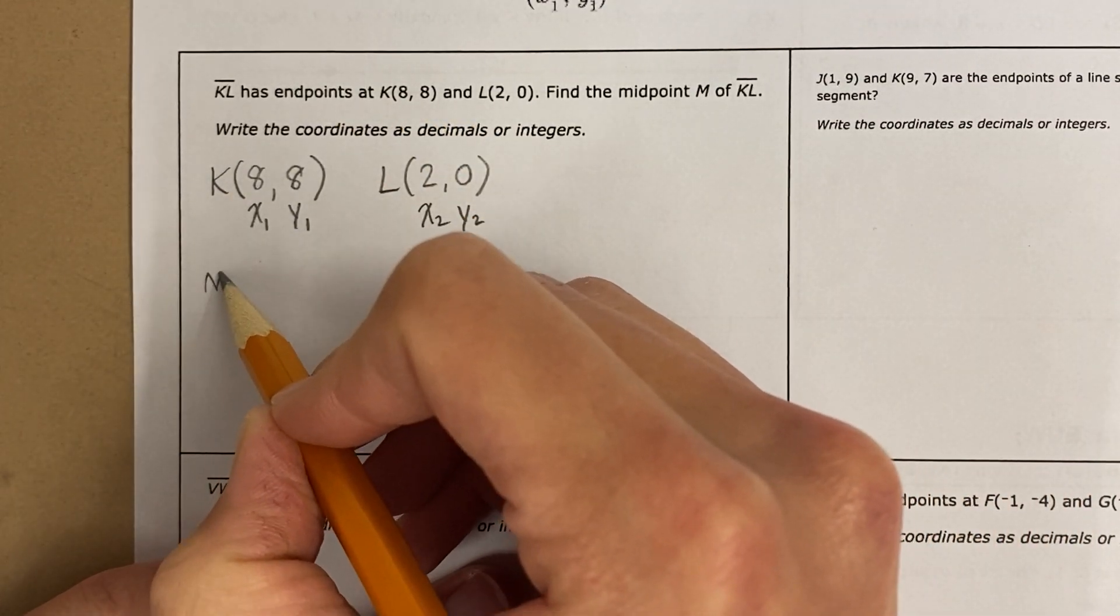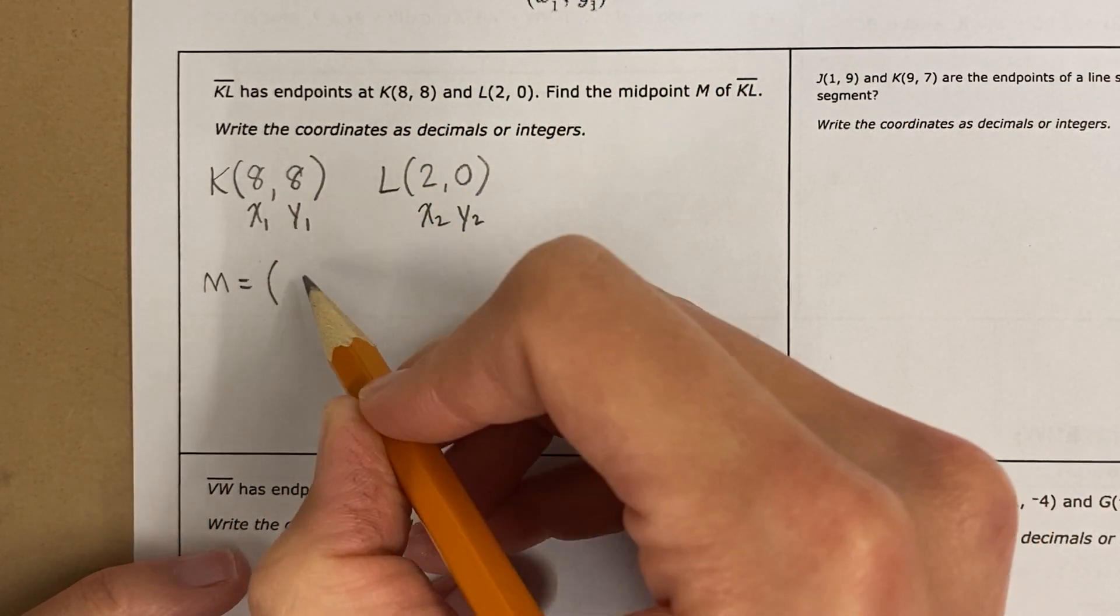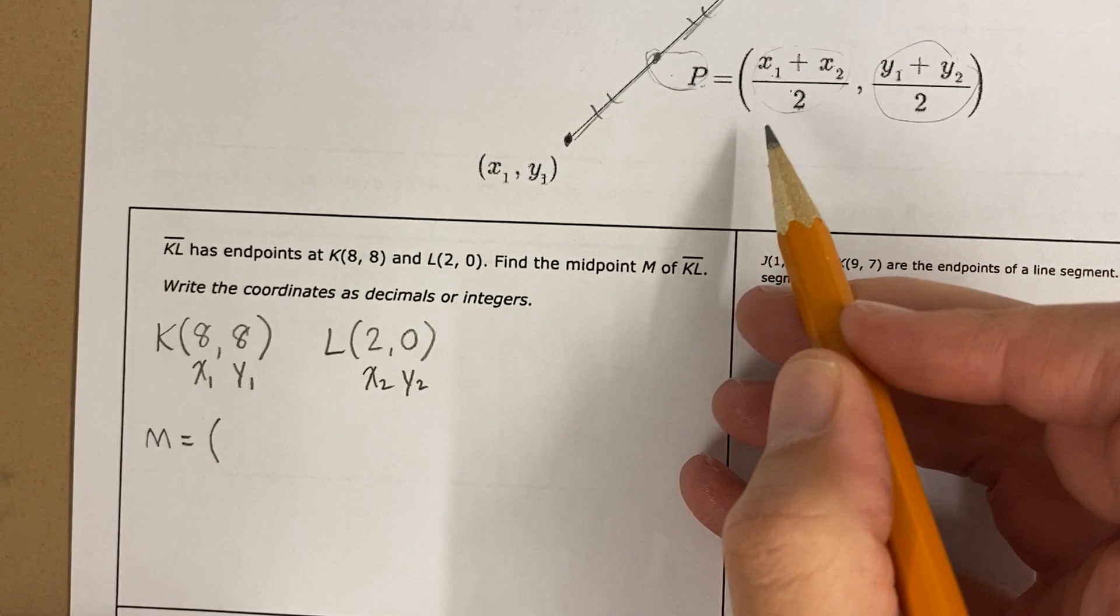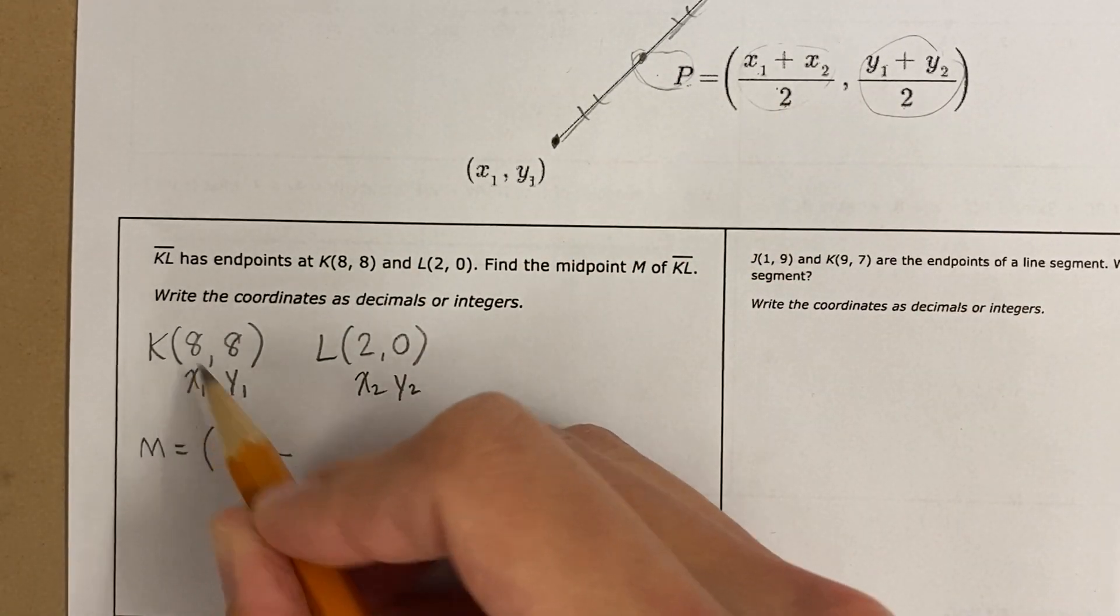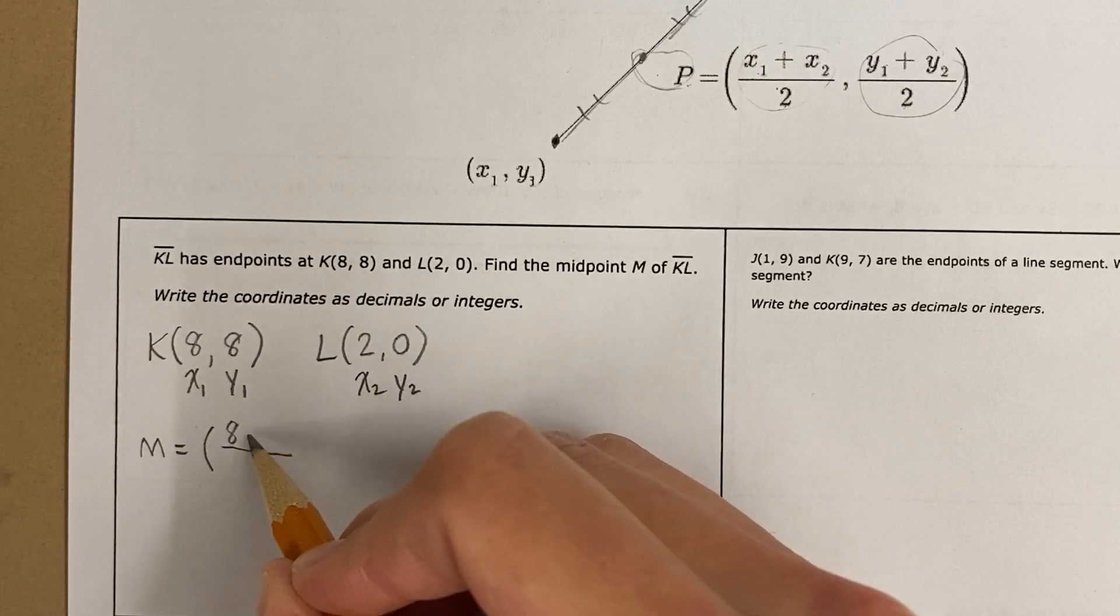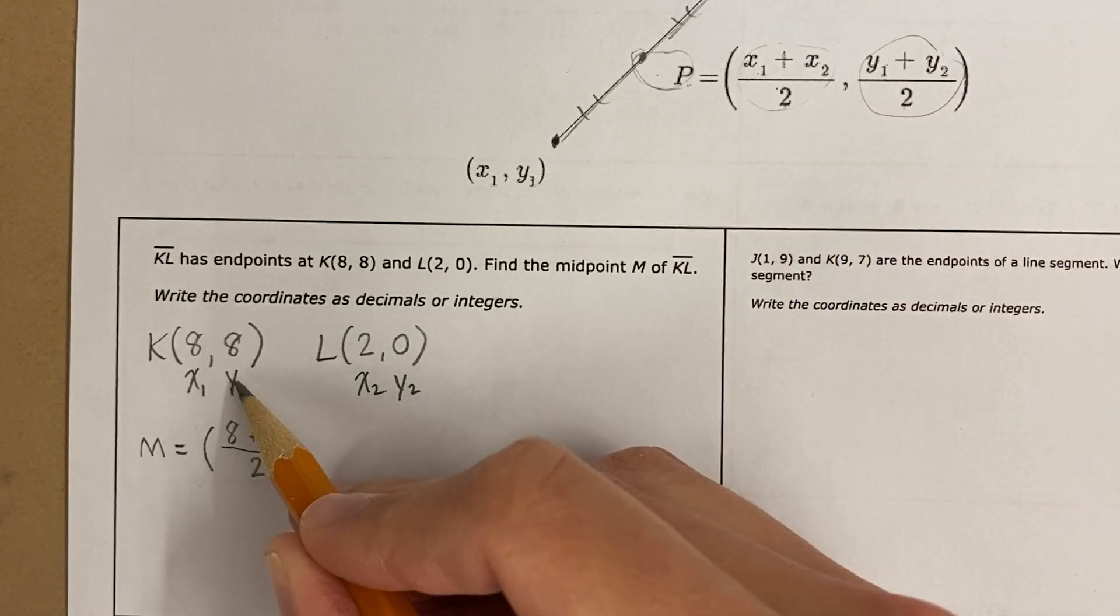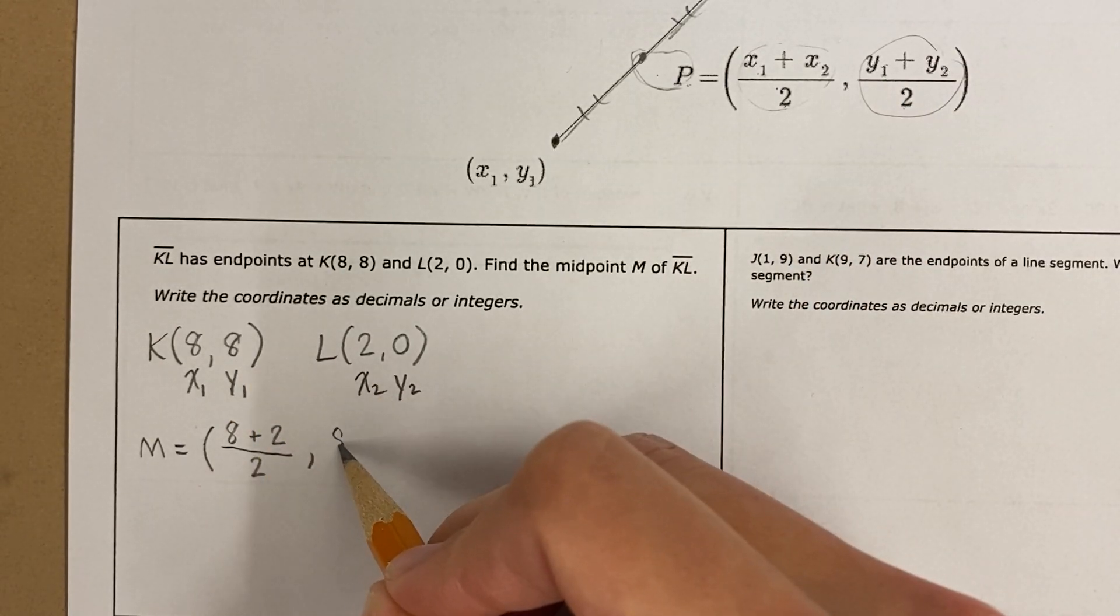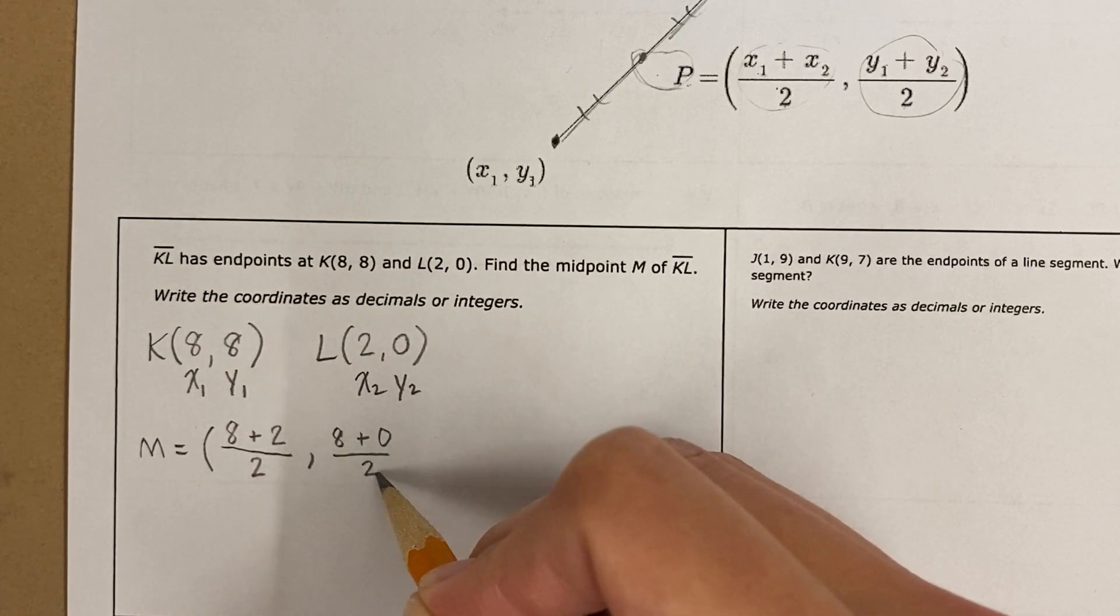Now, the midpoint, and we can use m, is this. Here's the formula, x1 plus x2 over 2, comma, y1 plus y2 over 2.